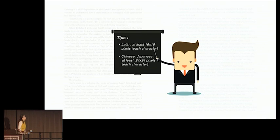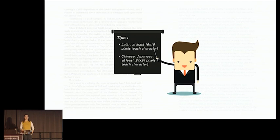Some performance tips for text recognition: for Latin characters, provide at least 16×16 pixels per character. For Chinese or Japanese, provide at least 24×24 pixels per character. With the latest ML Kit update, we can now detect the language of given text — it supports 103 languages including Arabic, Bulgarian, Greek, and Hindi. It can detect non-Latin languages as well.